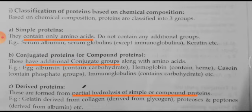Next is derived proteins. As the name indicates, they are derived from the partial hydrolysis of simple or compound proteins. When the above two protein types undergo hydrolysis, you get the third category called derived proteins. Examples include gelatin, derived from collagen; and proteases and peptones, which are also derived proteins.